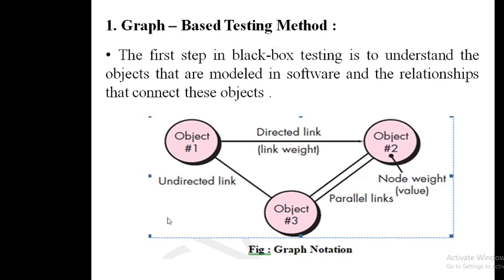To understand those objects and their connections, we use the graph-based testing method. In graph-based testing, objects and relations are represented in a pictorial format. For example, if our program has three objects — object one, object two, object three — how they are related and what relationships exist between them is explained through the graph-based method.